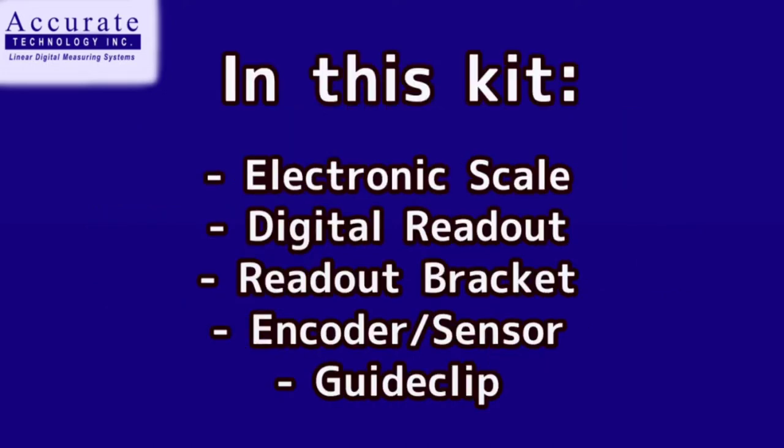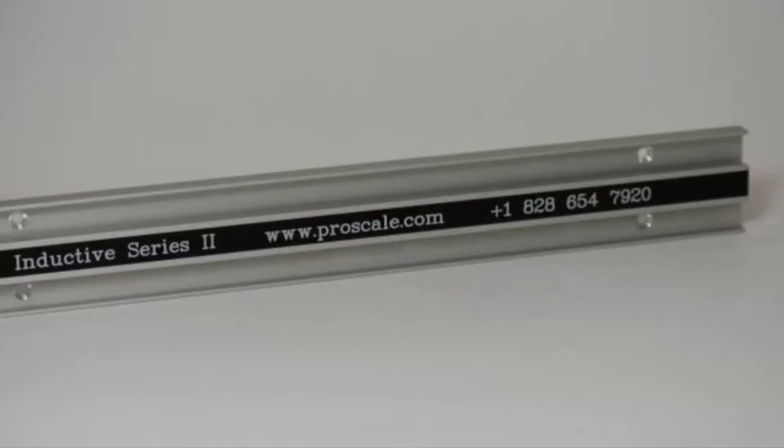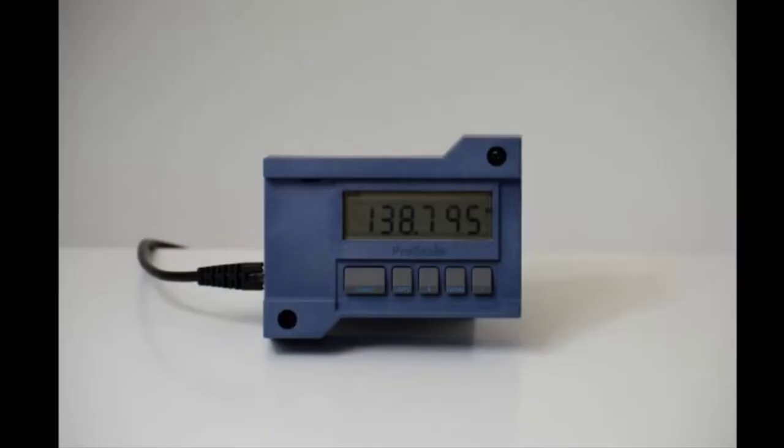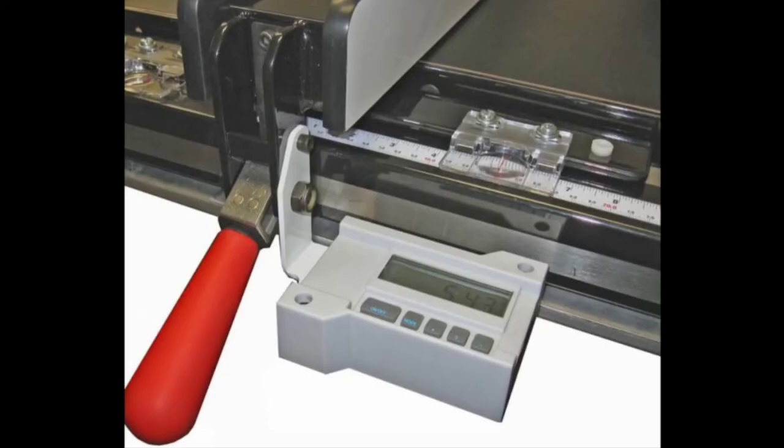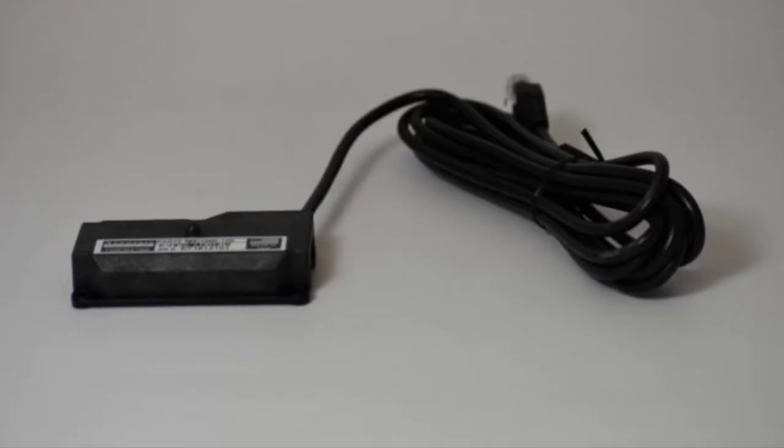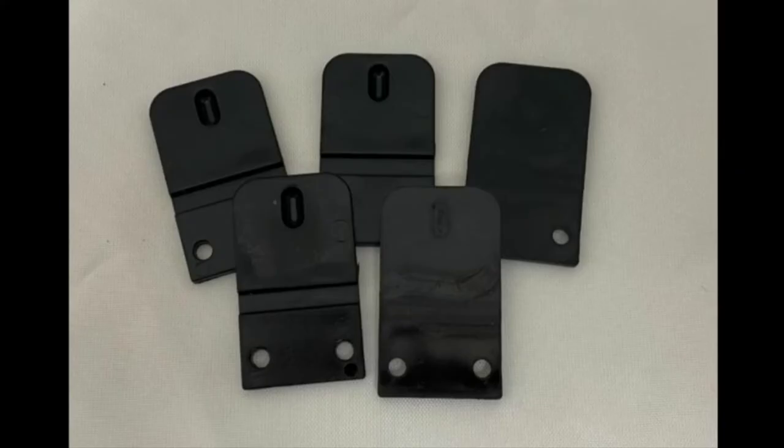The following components are included in this kit: The electronic scale. The standard scale length is 56 inches long, but custom sizes are available from 12 to 120 inches. A battery powered digital readout. A readout bracket which is a white steel part. Please note if the hinge kit was ordered, your bracket will have two additional holes in it. An encoder/sensor with a short cable. A guide clip which safely transfers fence motion to the motion of the electronics.